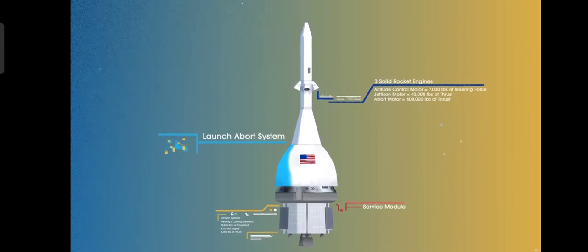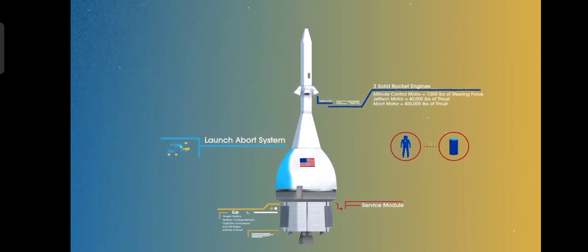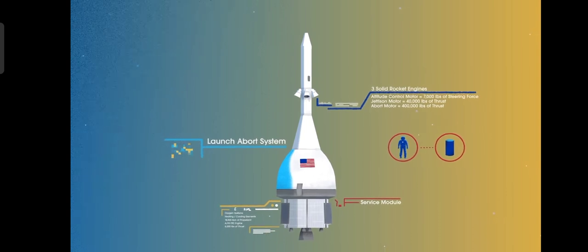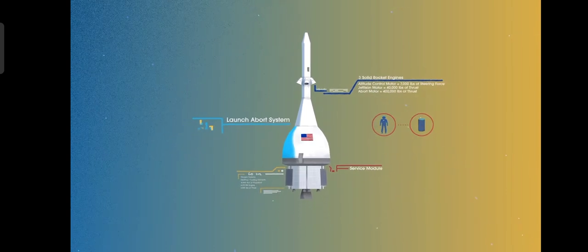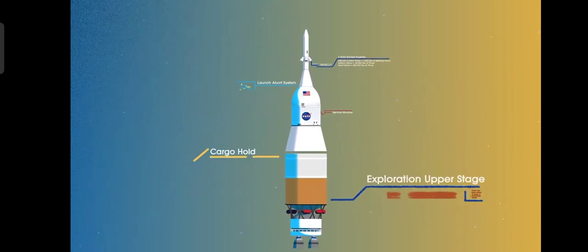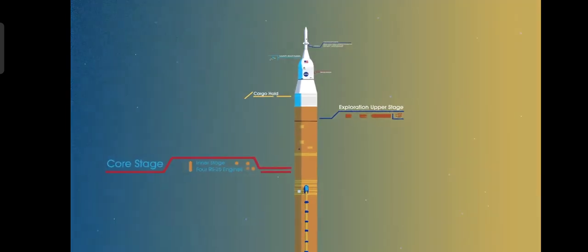To accomplish the task of launching our crew in heavy payloads, NASA is building the Space Launch System, comprising of a cargo hold, an exploration upper stage, a massive core stage, and two extended solid rocket boosters.